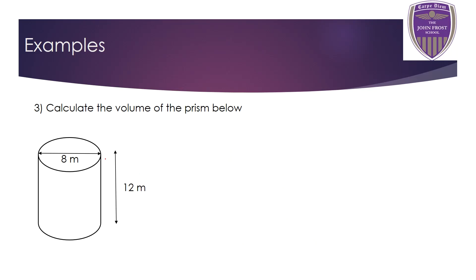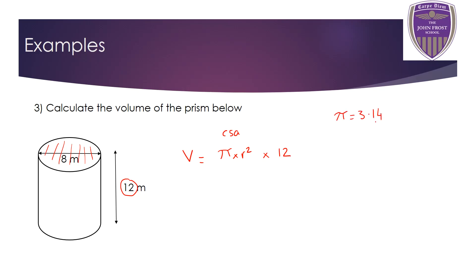The final example is a cylinder. The cross-section is a circle, so to find the volume I need pi times the radius squared, then multiply by the length of the shape, which is 12. Pi is a function used with circles — you can use the pi button on a calculator, or use pi equal to 3.14 in an exam. We need to know the radius of the circle.